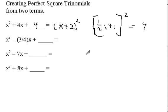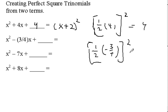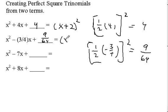For x squared minus three-fourths x, I take one-half times negative three-fourths, which gives negative three-eighths. Squaring that gives nine-sixty-fourths, so I add nine-sixty-fourths. This gives me x minus three-eighths, quantity squared. For x squared minus seven x, one-half of negative seven is negative seven-halves, and squaring gives positive forty-nine-fourths, giving me x minus seven-halves, quantity squared.